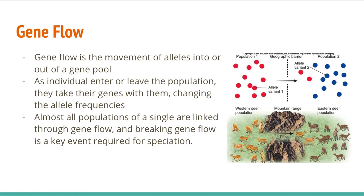Gene flow is a very important one to understand, and gene flow is actually really interesting because it's almost always violated. Gene flow and non-random mating are probably the two easiest assumptions of Hardy-Weinberg equilibrium to violate. What gene flow is is just organisms moving from one population to another, which introduces new alleles, or if someone's leaving a population, it removes old alleles from the population.